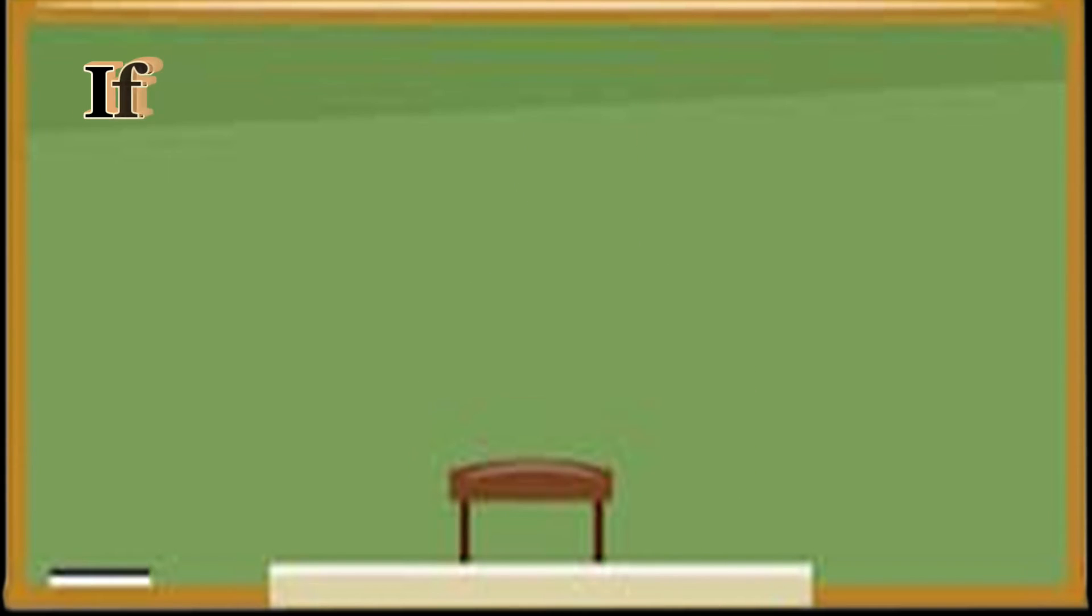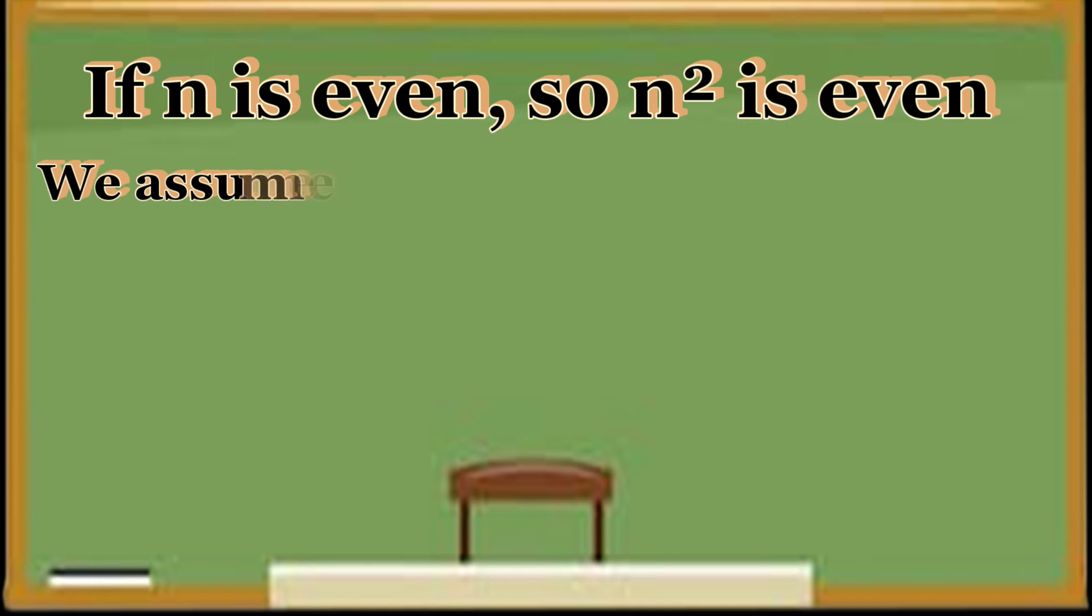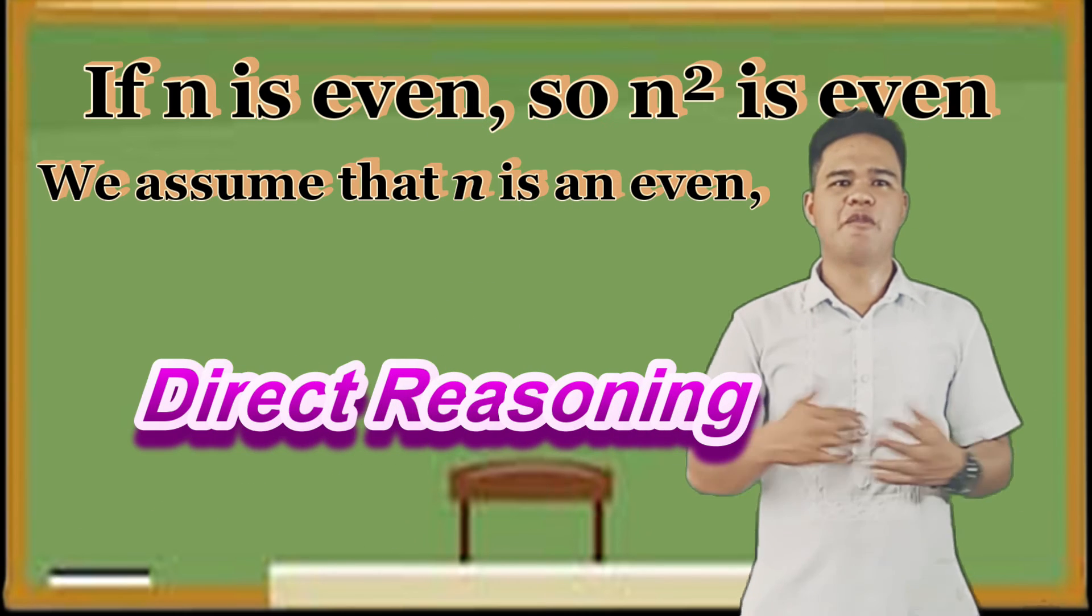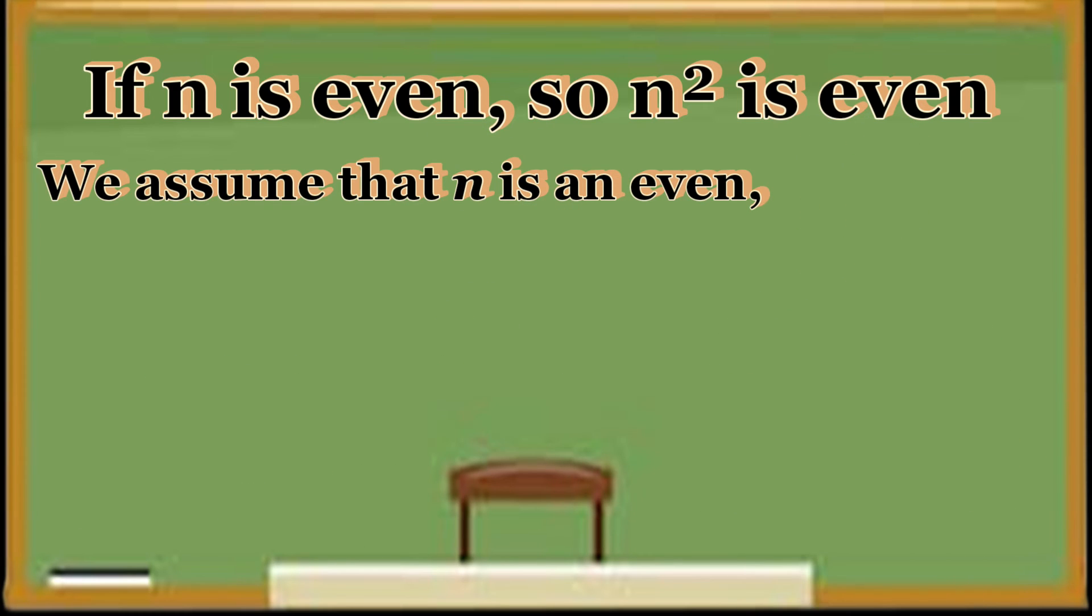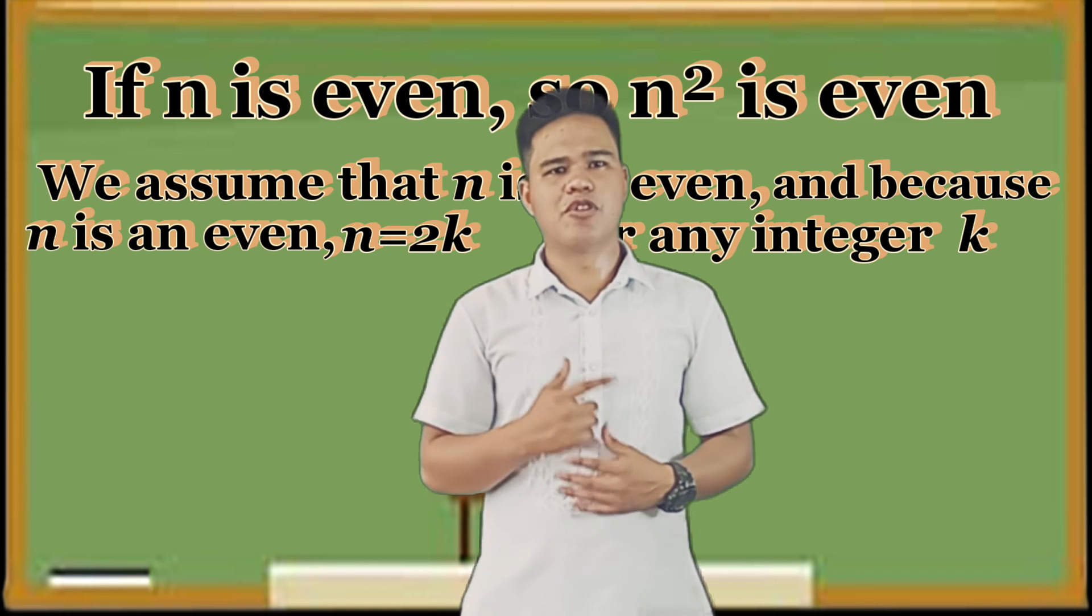Number 3: If N is even, then N squared is even. So assume that N is even. This is direct reasoning. Because N is even, N equals 2K for some integer K.